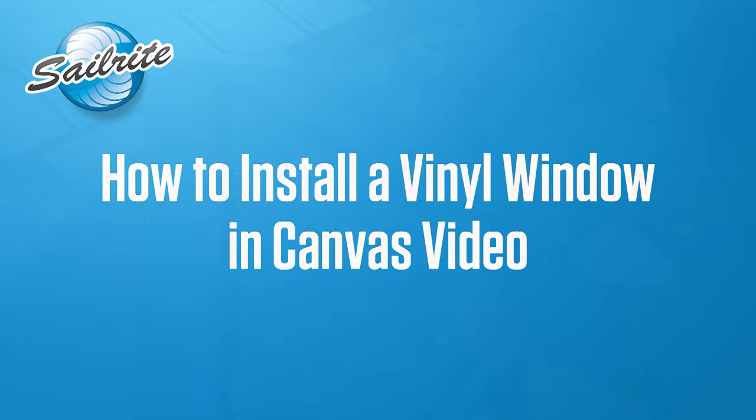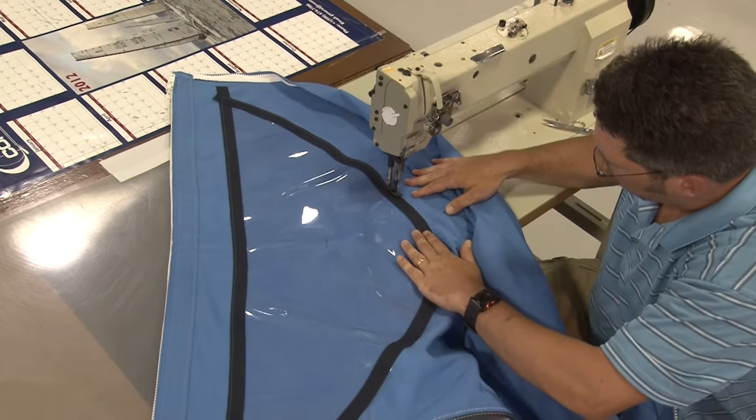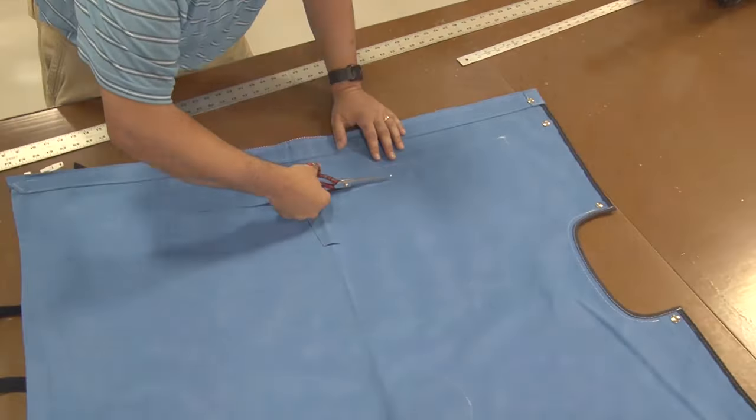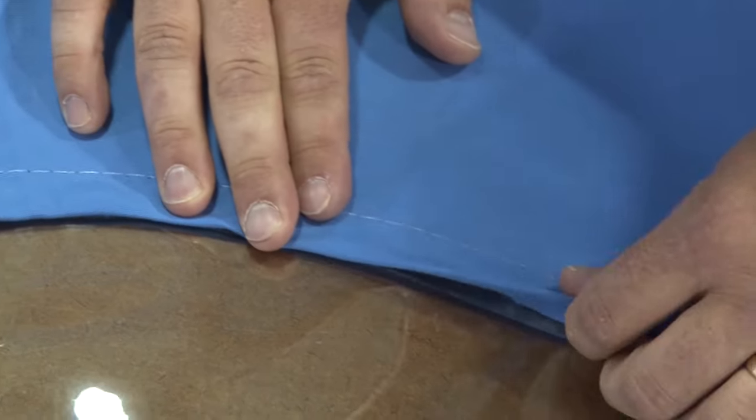You would not want to cut out the canvas material until you have the outside perimeter of the vinyl sewn to the canvas. Then you would cut out the material, then finish up the edges. In this video we will show you how it is done.